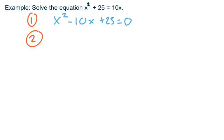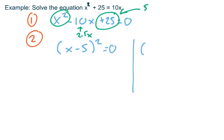I can look for two numbers whose product is 25 and whose sum is negative 10, or I can recognize that this is a perfect square trinomial. You've got a perfect square in the first position and in the last position. 25 happens to be five squared, and the middle term is two times five times x. So this will factor as x minus five squared, or if you prefer, x minus five times x minus five.